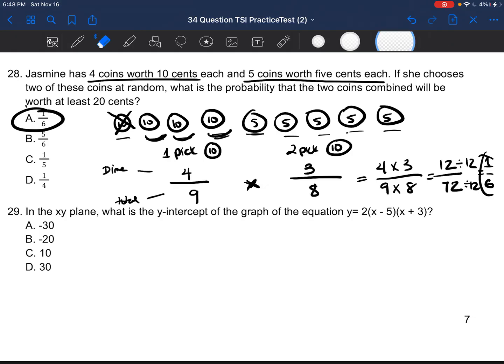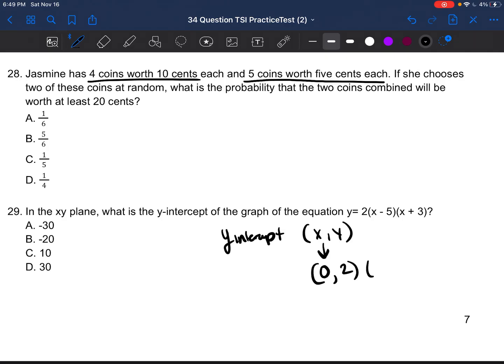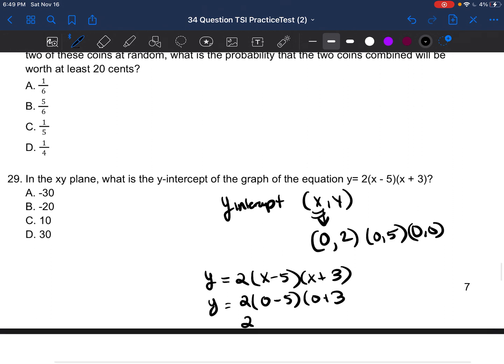Since you guys are looking at question number 29, I will just throw that one in as extra. Okay. So I'm just being nice to help us to be able to focus. So 29 says in the XY plane, what is the Y intercept of the graph of the equation? Y is equal to 2(X minus 5)(X plus 3). So if you remember, Y intercepts are always XY points, but the X is always zero. So it will be (0,2) or (0,5) or (0,0). So the X is always zero. So if you're given an equation Y is equal to 2(X minus 5)(X plus 3), if you want to figure out what the Y is equal to, just plug in zero for X.